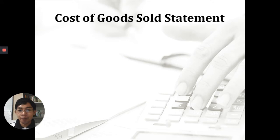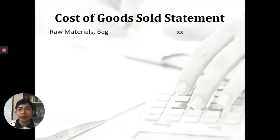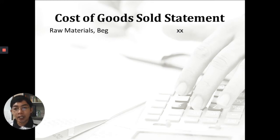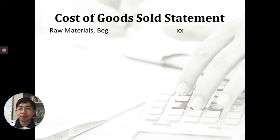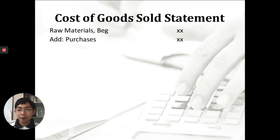In job order costing, you need to familiarize yourself with the cost of goods sold statement. You need to know the format and sequence of items to compute cost of goods sold properly. First on the list is raw materials beginning — the wood, metal, or other materials still in your warehouse, which are remaining materials from the previous period that are not yet sufficient for this period's production.